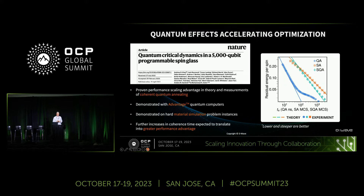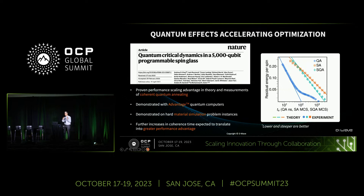The second significant finding is that against competing classical algorithms — in this case quantum Monte Carlo simulated annealing — the approach to optimality scales faster with annealing quantum computing. Third, beyond the coherence limit we see departure from ideal behavior, and as we increase coherence time we can move further along that curve, suppressing the departure and pushing toward better quality answers. This clearly shows how improving coherence will improve optimization problem performance.